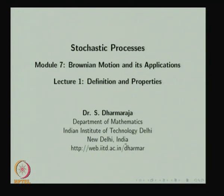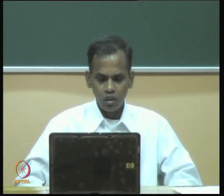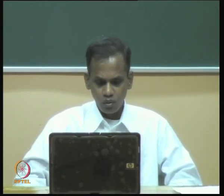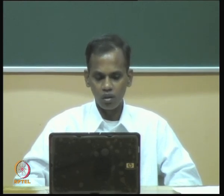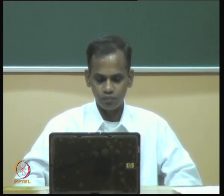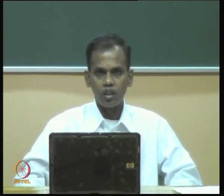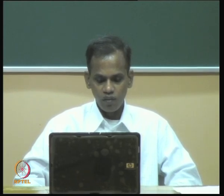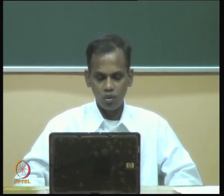This is the Stochastic Processes Model 7: Brownian Motion and Its Properties, Lecture 1 - Definition and Properties. In the last six models we started with a review of probability, then discussed the definition of stochastic processes, stationary processes, discrete-time Markov chains, continuous-time Markov chains, and martingales. This is the seventh model on Brownian motion and its properties.